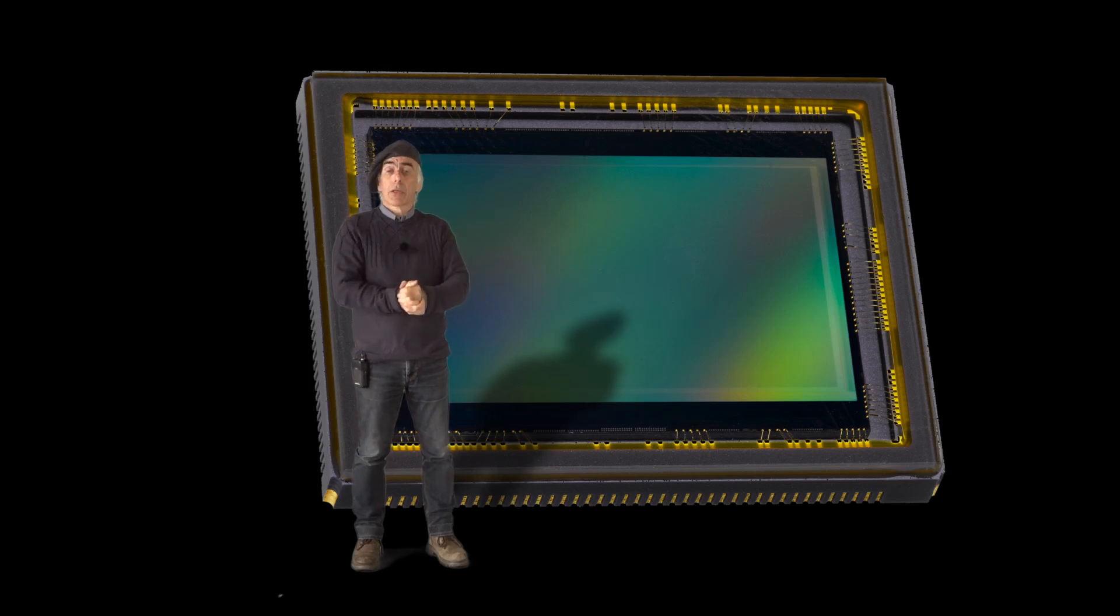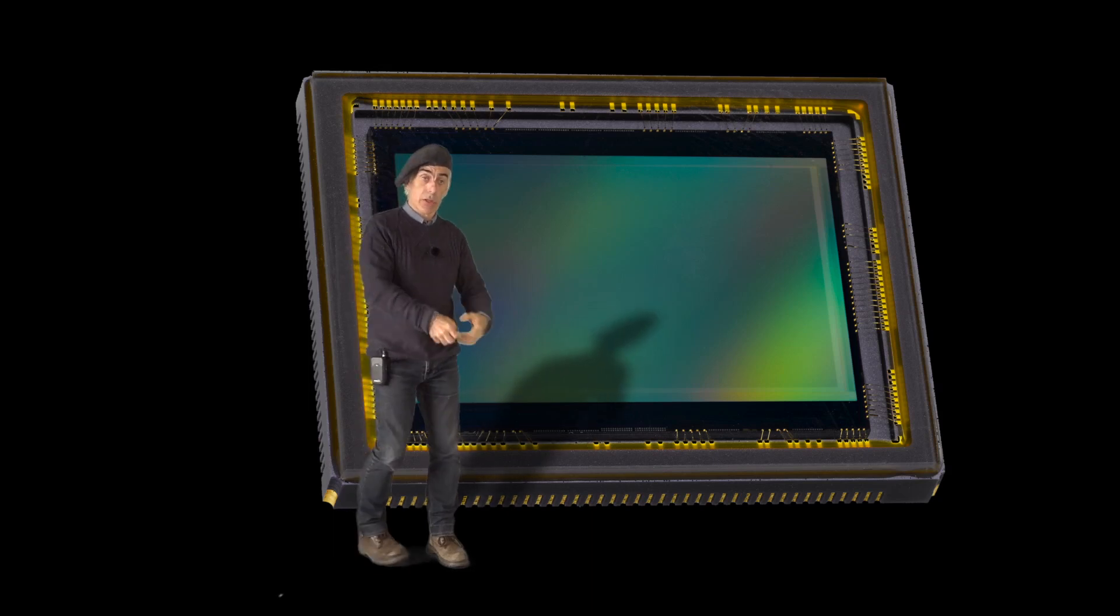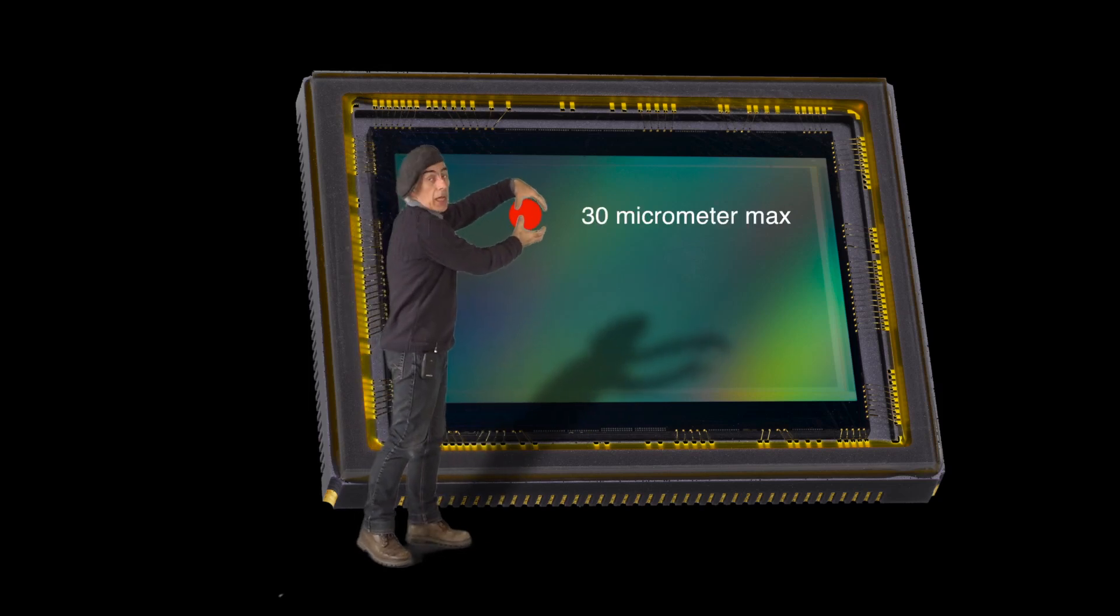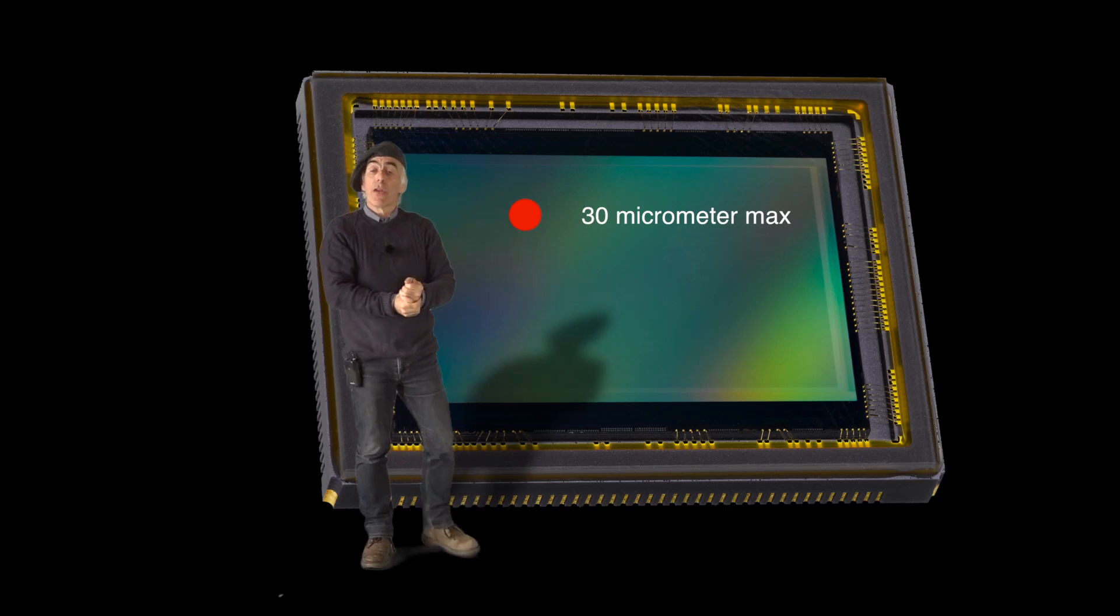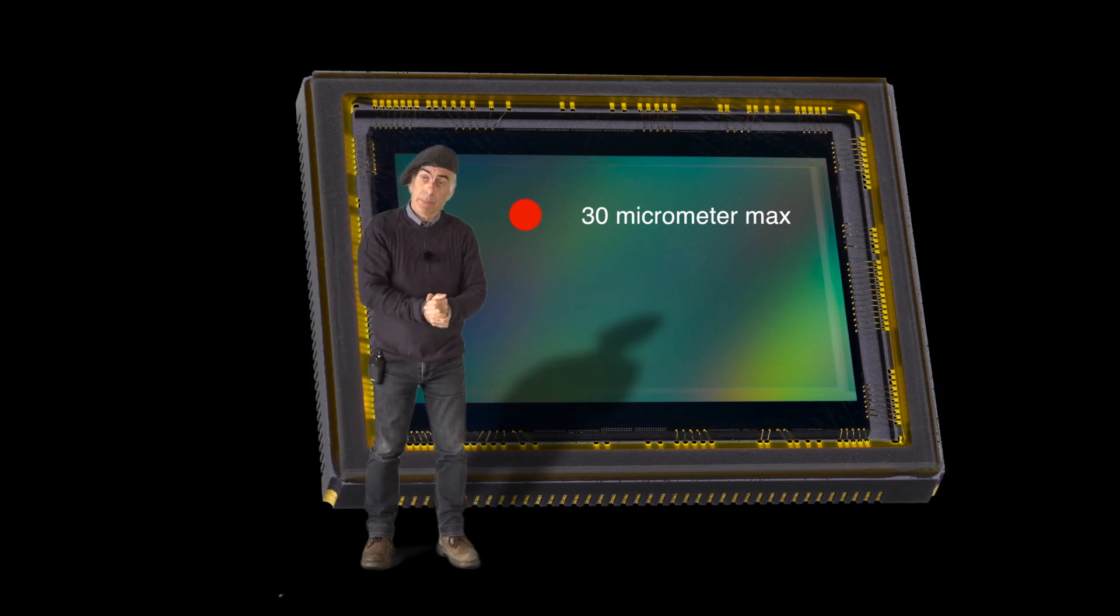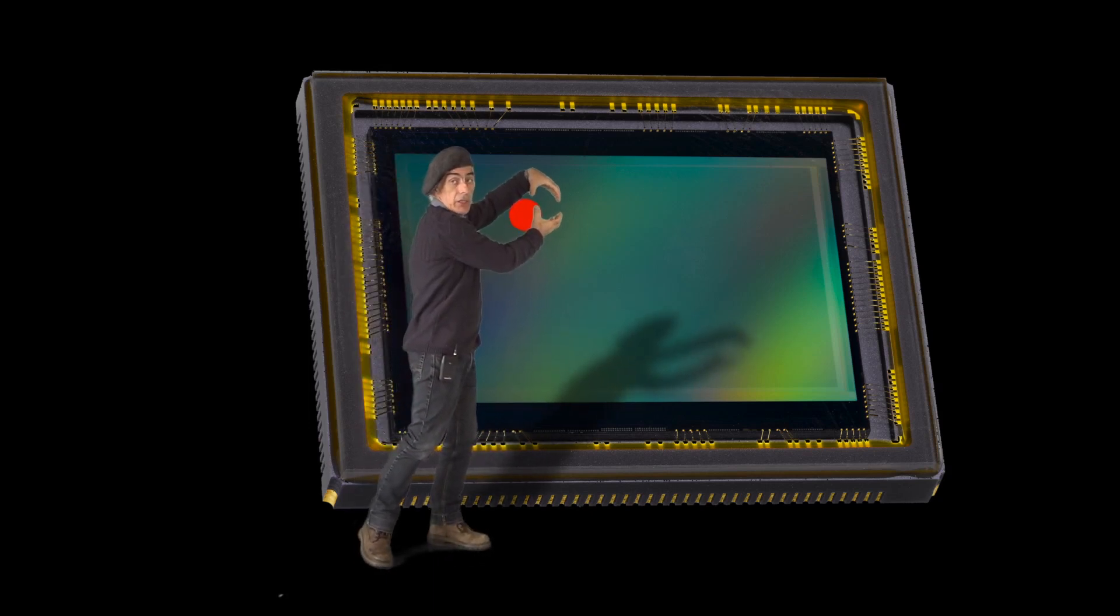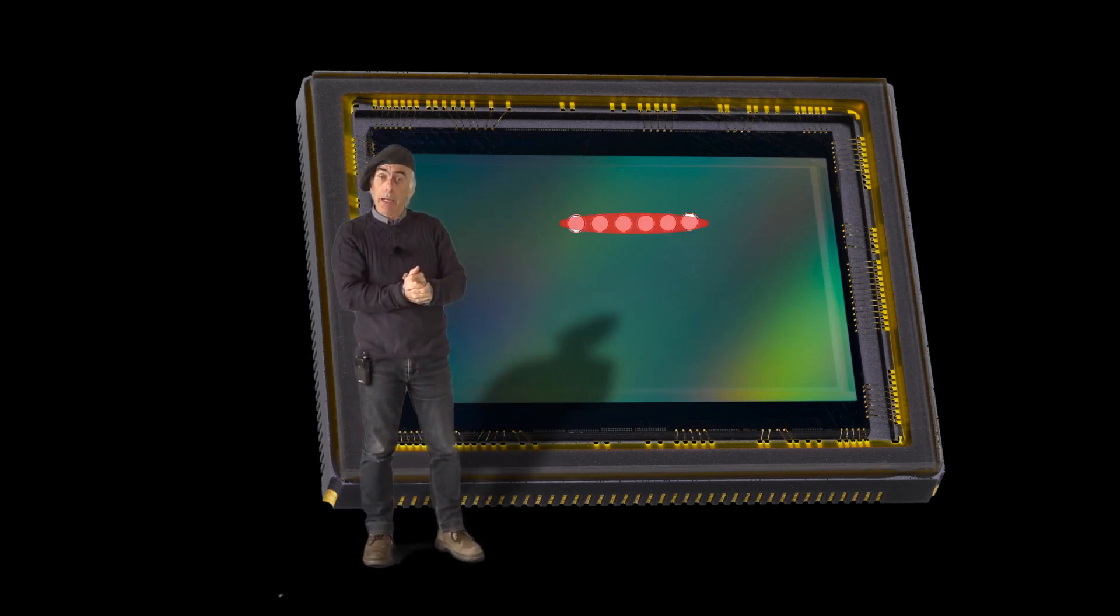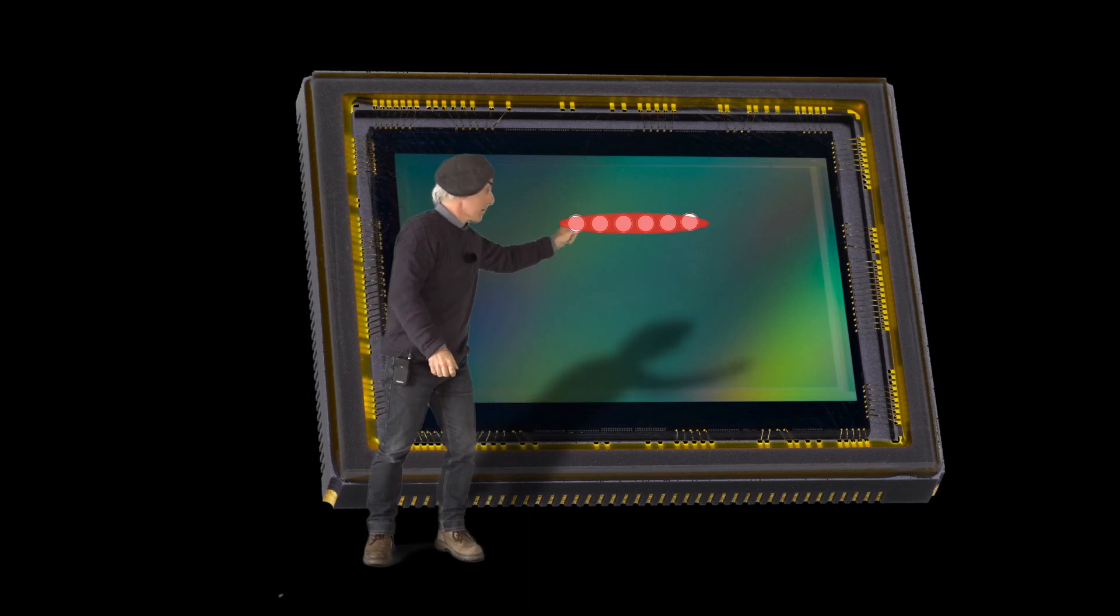Now we know that the maximum permissible circle of confusion, remember this dish for objects that we did not focus on but we will still see as sharp, is 30 micrometers, meaning that that spot, that dish, will occupy 6 pixels.